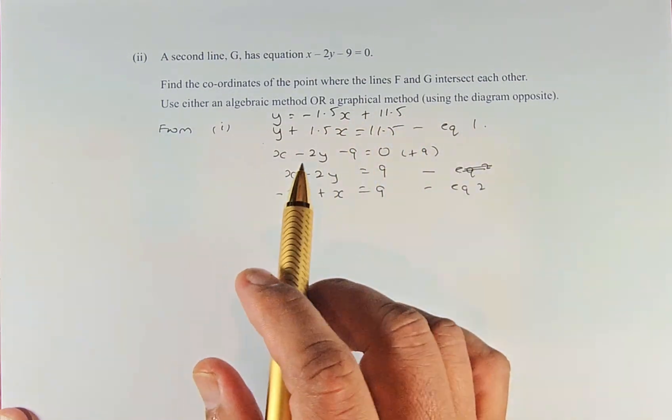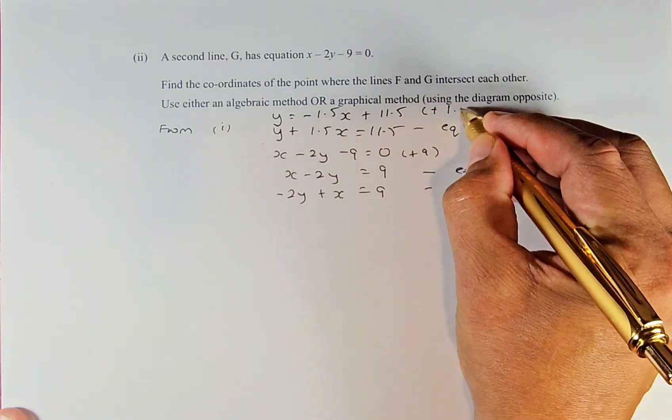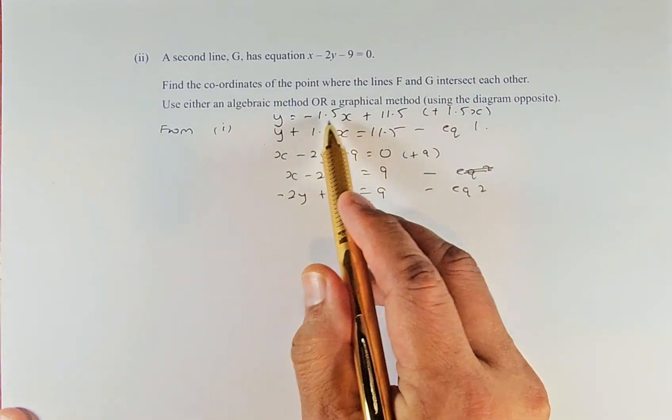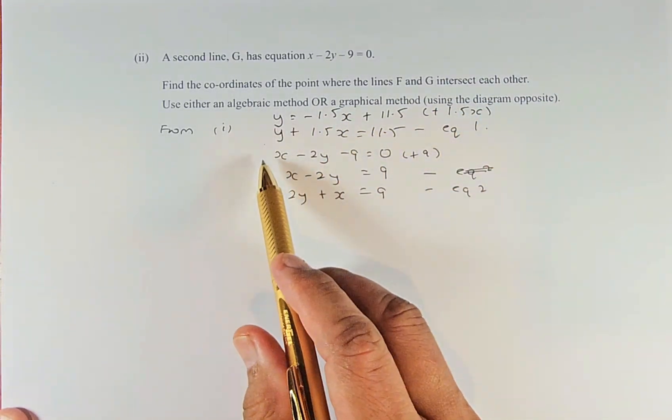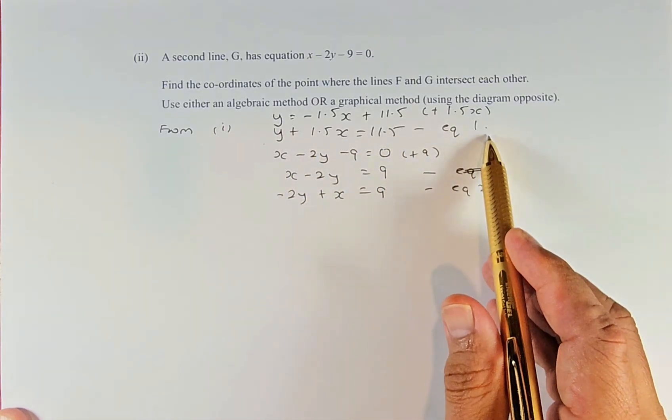We're going to rearrange it to have y, x, and a number. We'll add 1.5x to both sides. This will cancel out. So y + 1.5x = 11.5. That's equation 1.